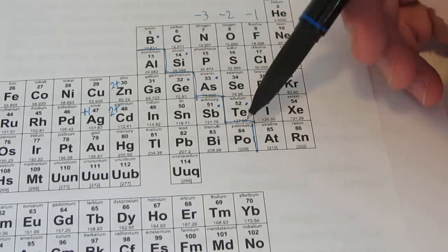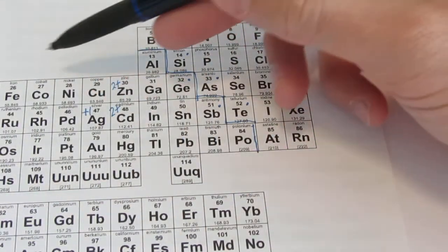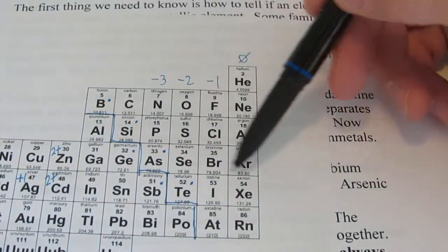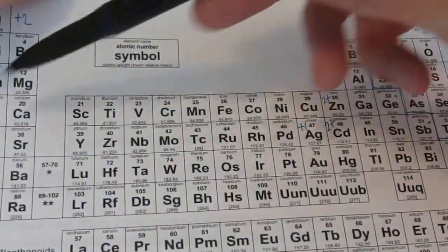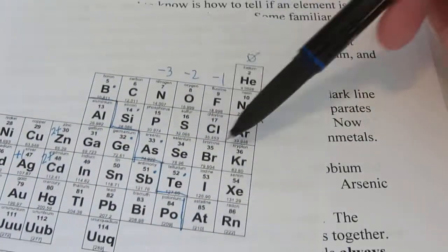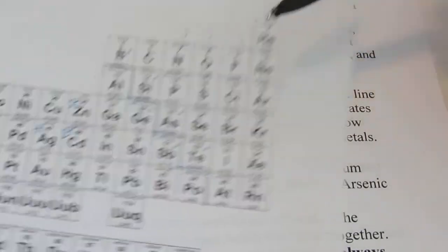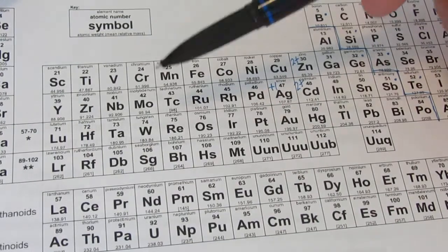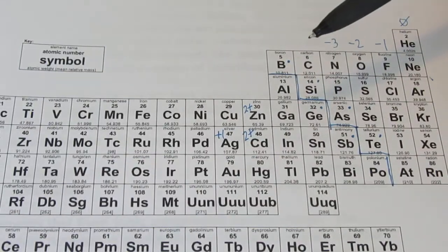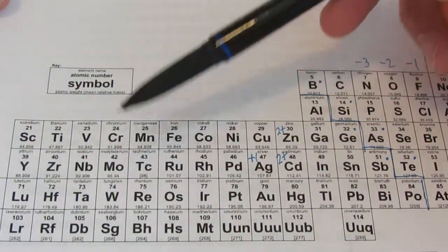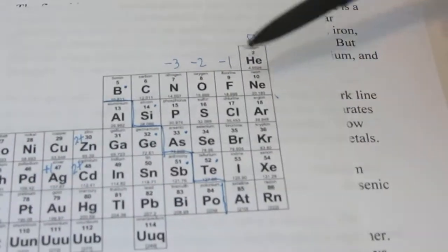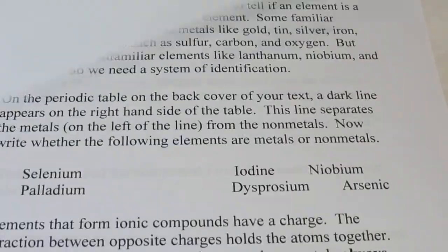That separates our metals, which are on the left of that line, from our non-metals, which are on the right. And you can see that there are many more metals than there are non-metals. So if it's on this side, we're going to call it a non-metal. If it's on this side of the line, we're going to call it a metal. And the first type of ionic bond we're talking about are one of these metals bonding with one of these non-metals.